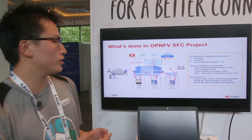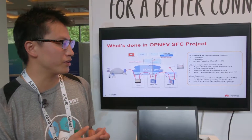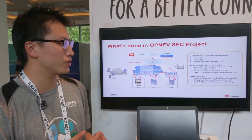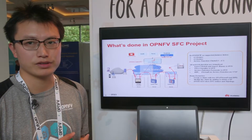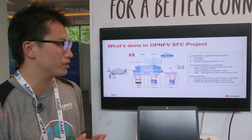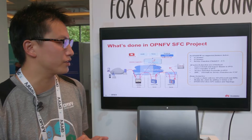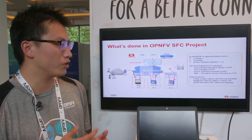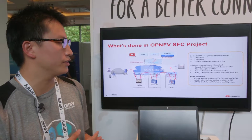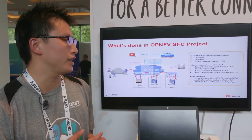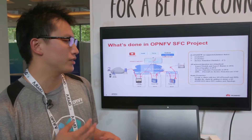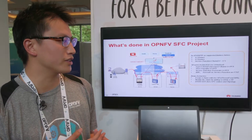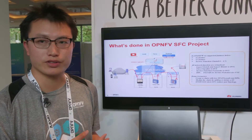Today we have three demo scenarios. The first is to create a chain with two service functions: firewall and DPI. Then we will modify the chain by adding or deleting a service function. The third demo will show the ONOS GUI displaying SFC status and topology.